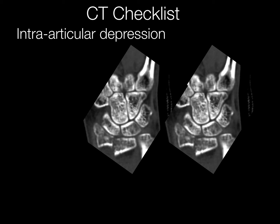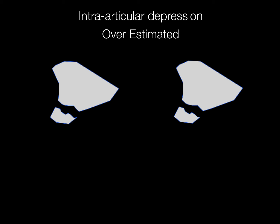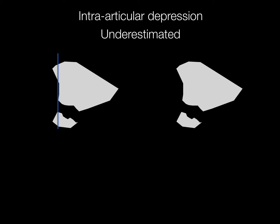Intra-articular depression is a very important concept. If the step-off is greater than one to two millimeters, that can lead to premature arthritis. Here's an example of how that could be measured using two straight lines for the articular surface of the distal fracture fragments. However, if we try to follow the contour of the distal radius with a circular line, we'll come up with a different measurement. An overestimation of the intra-articular depression can occur if you use a straight line. Conversely, we can also underestimate it using the straight line, whereas following the natural contours gives the true amount of depression.